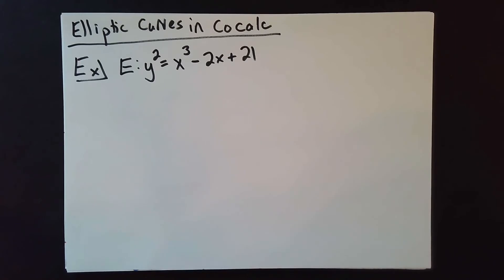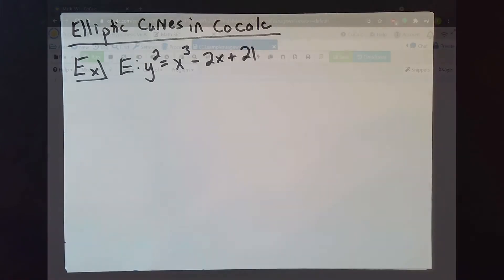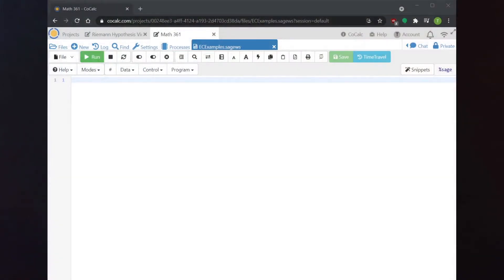As our basic example today, let's start with the curve y² = x³ - 2x + 21. This is just a somewhat random curve that I happen to choose. Let's go ahead and pull up a CoCalc window and see how we would get CoCalc to think about this curve.